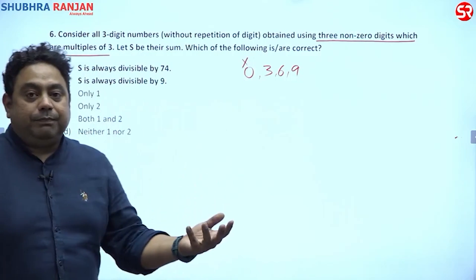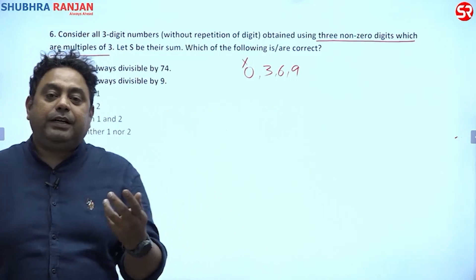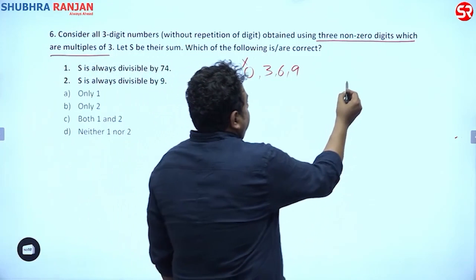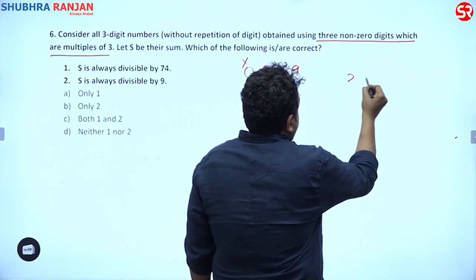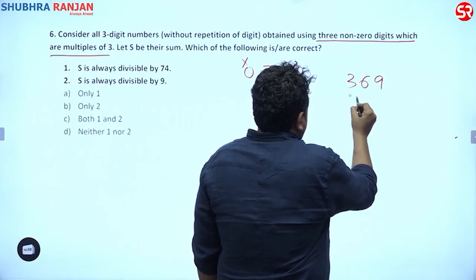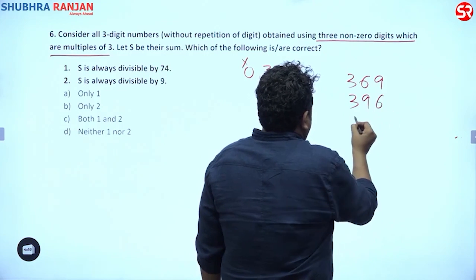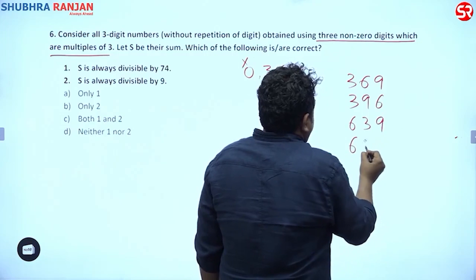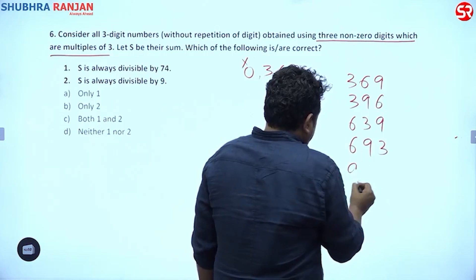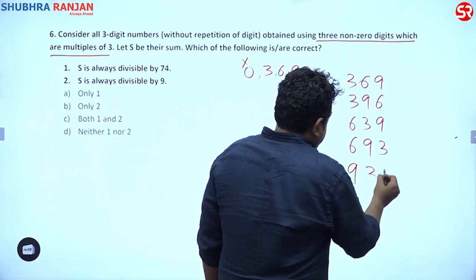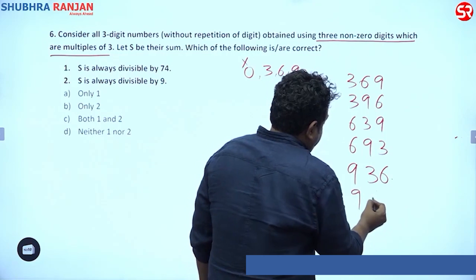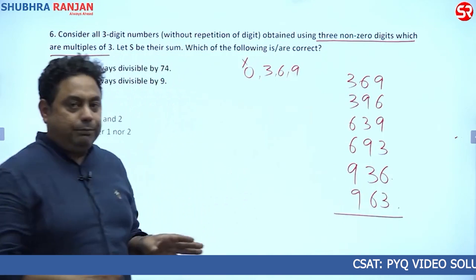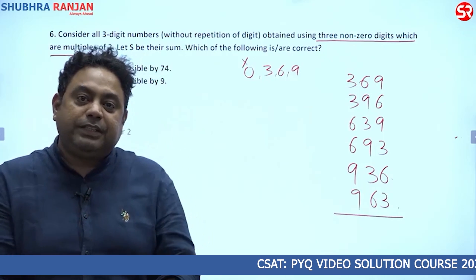Let S be the sum of all three-digit numbers formed using 3, 6, and 9. The numbers formed are: 369, 396, 639, 693, 936, and 963 — these are the six permutations.